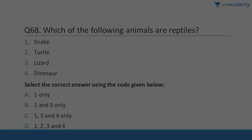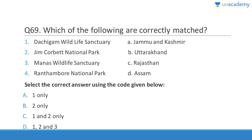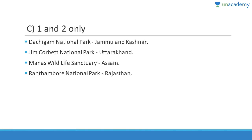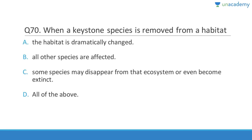Question 68: Which animals are reptiles — snake, turtle, lizard, dinosaur? All are examples of reptiles. Answer is D, 1, 2, 3, and 4. Question 69: Dachigam Wildlife Sanctuary in Jammu and Kashmir — correct. Jim Corbett National Park is in Uttarakhand — correct. Manas Wildlife Sanctuary is in Assam — wrong per the question. Ranthambore National Park is in Sawai Madhopur district of Rajasthan. Answer is C, 1 and 2 only.